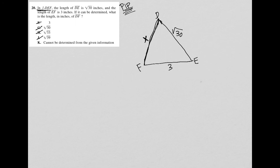What math would you do to prove that side DF would be root 39? So for that reason, the only answer that remains that makes any sense here is choice K.